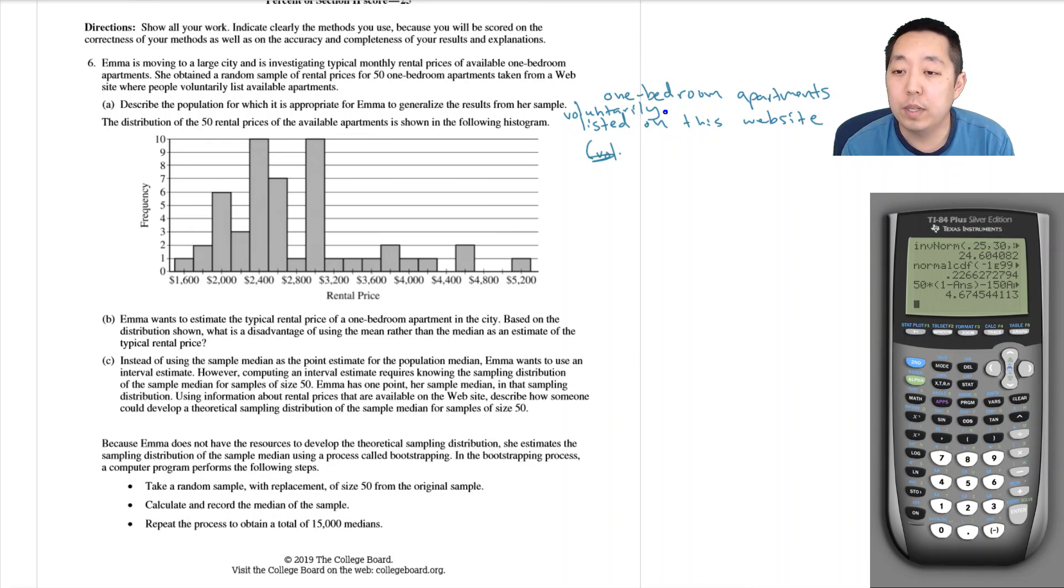Part B: Emma wants to estimate the typical rental price of a one-bedroom apartment in the city. Based on the distribution shown, what is the advantage of using a mean rather than the median as the estimate of the typical rental price? Let's see.